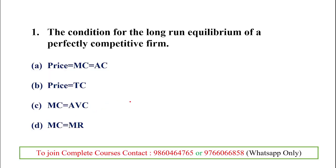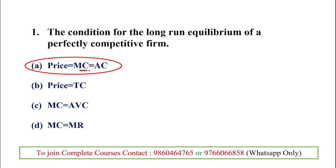The first question is related to the long-run equilibrium of a perfectly competitive firm. A perfectly competitive firm has a large number of buyers and sellers with identical products. In this market, price equals MC equals AC, and the profit is normal. The answer for this question is price equals MC equals AC.